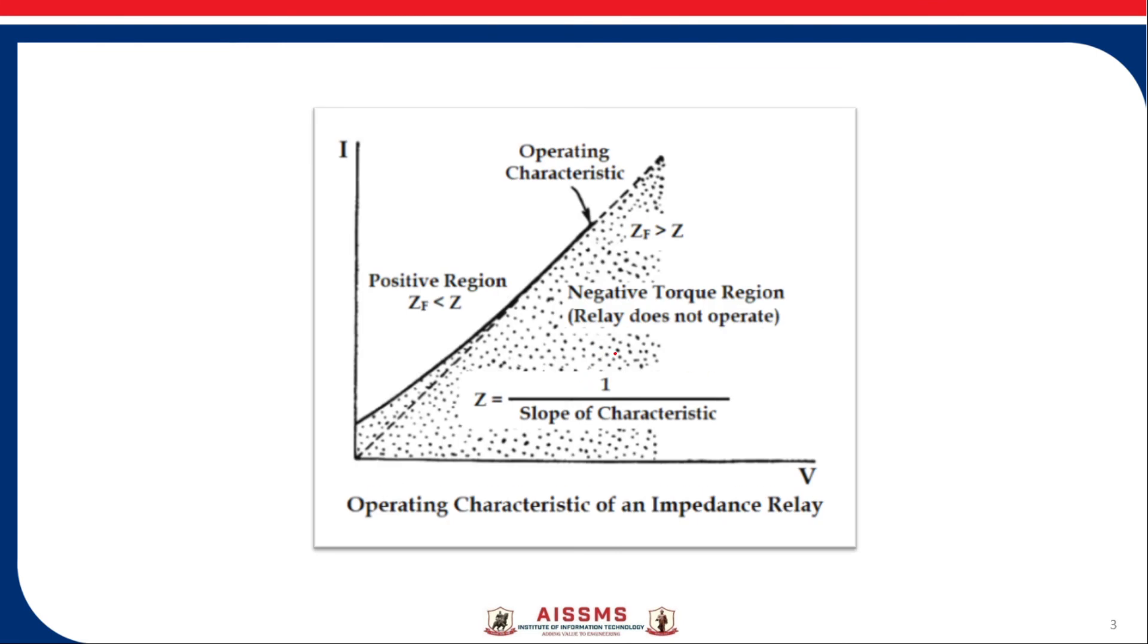The operating characteristic of an impedance relay: The impedance relay can sense the ratio between voltage and current at a point on a line. The impedance between location of CT PT and the fault is proportional to the distance between the CT PT location and the fault. Hence impedance relay is called as distance relay.